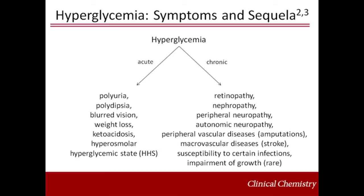Long-term complications of diabetes include retinopathy with a potential loss of vision, nephropathy leading to renal failure, peripheral neuropathy and vascular diseases with risk of foot ulcers and amputations, and macrovascular diseases such as cardiac disease and stroke. Susceptibility to certain infections may accompany chronic hyperglycemia, and, although rare, Mauriac syndrome, or the impairment of growth observed in type 1 diabetes, may also be seen.